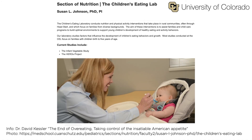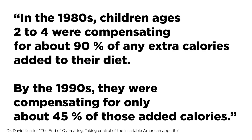Infants and preschool children instinctively adjust their food consumption over a period of a day to take in a consistent number of calories — this is known as compensation. Give a preschooler food that is more energy-dense than usual, and the child will compensate by subsequently eating less of other foods. But that self-regulatory system is changing. Susan Johnson, who directs the Children's Eating Laboratory at the University of Colorado Health Sciences Center, said that in the 1980s children aged 2 to 4 were compensating for about 90% of any extra calories added to their diet. By the 1990s, they were compensating for only about 45% of those added calories. Johnson found that school-aged children compensate to some degree, but not fully, and their capacity to compensate declined with age, year after year, especially among girls.